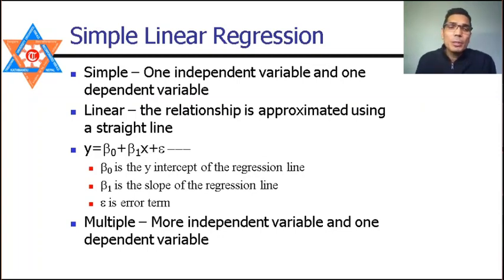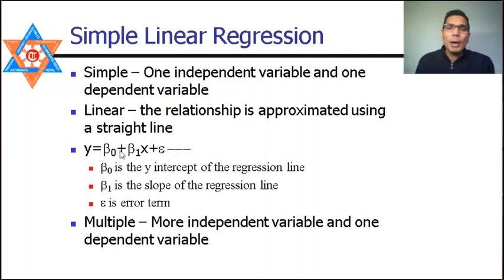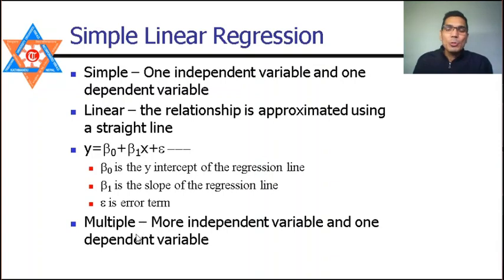The equation of a straight line is y = β₀ + β₁x + ε, where ε is the error term, β₀ is the y-intercept of the line, and β₁ is the slope of the straight line. If there is more than one independent variable, that is called multiple linear regression.